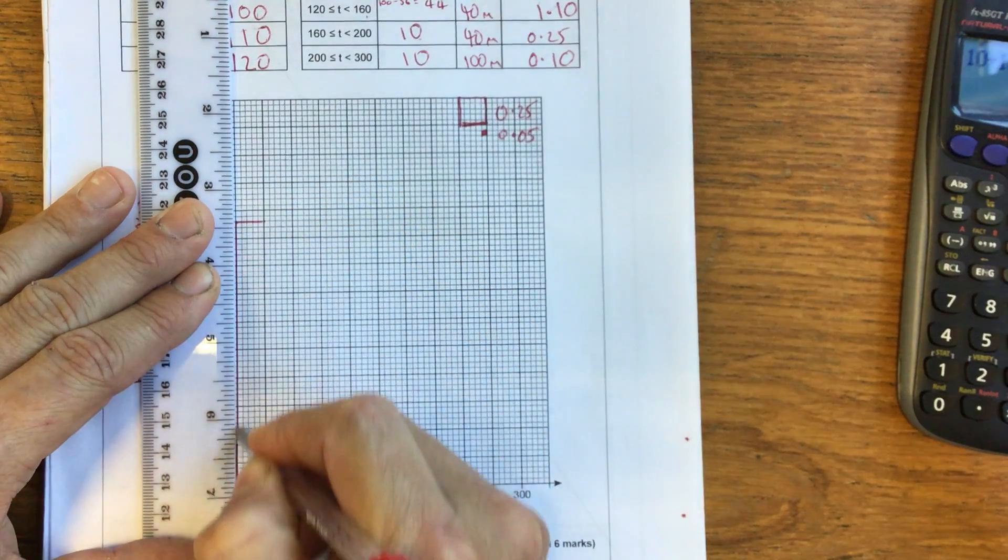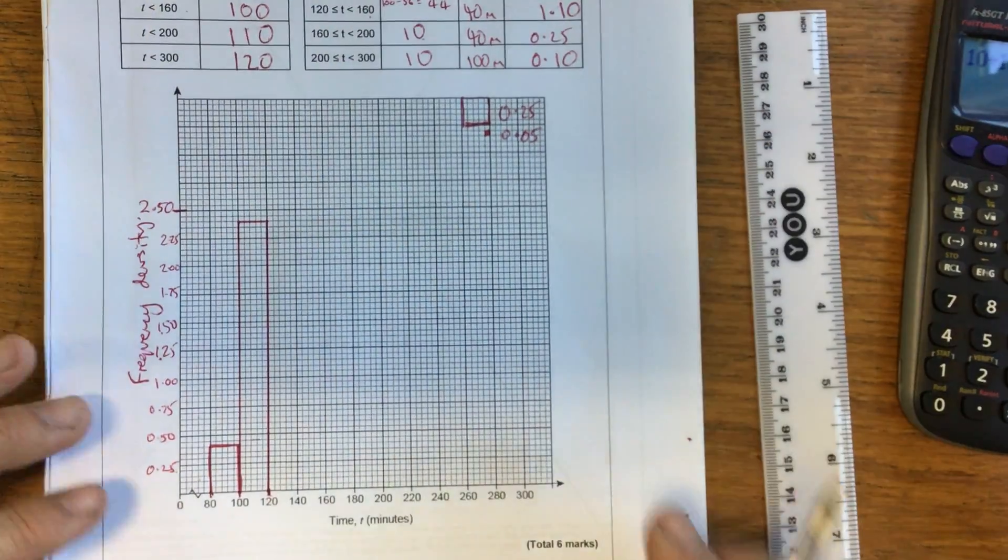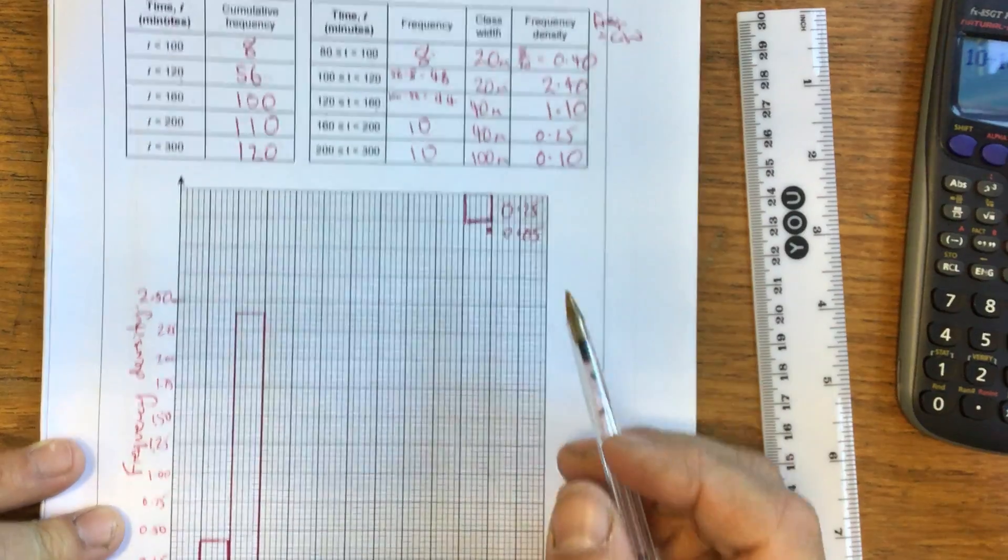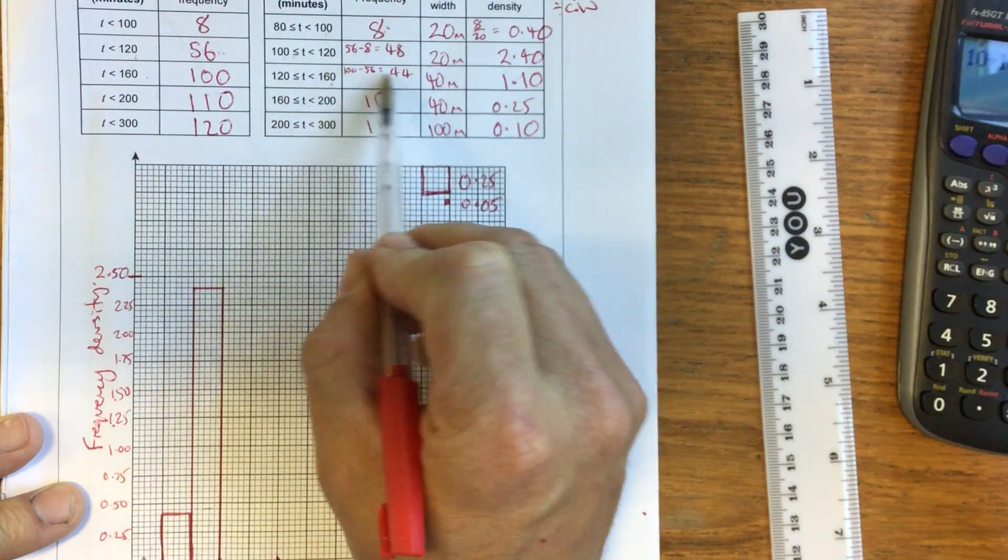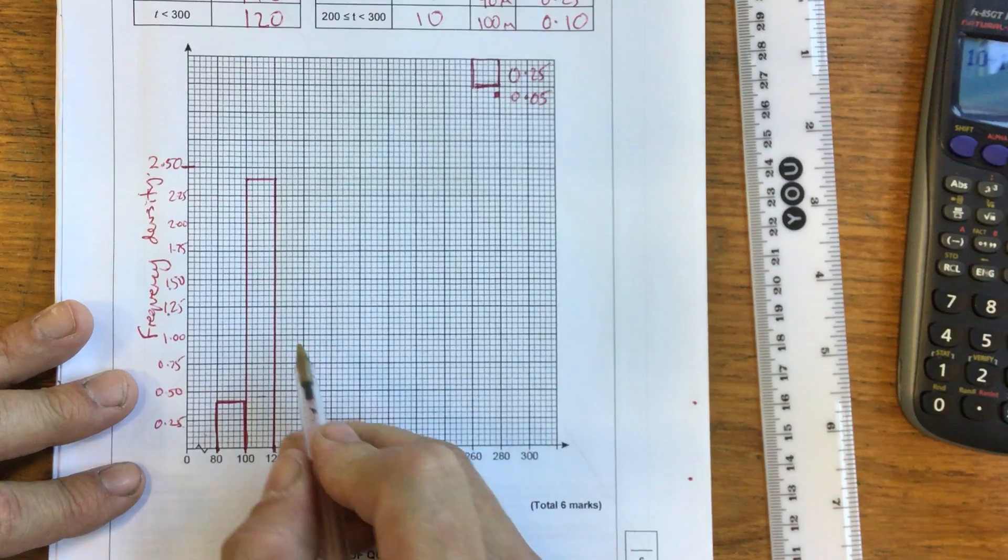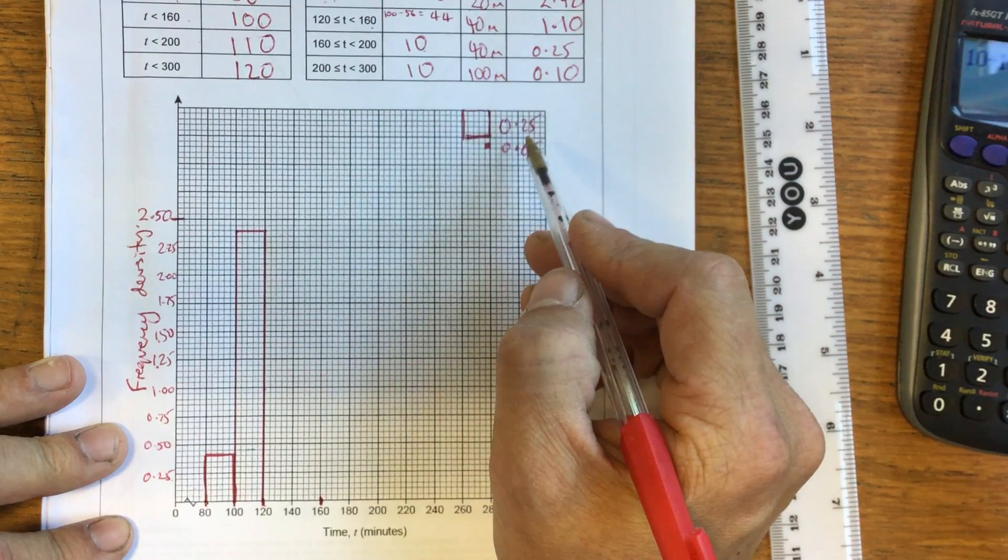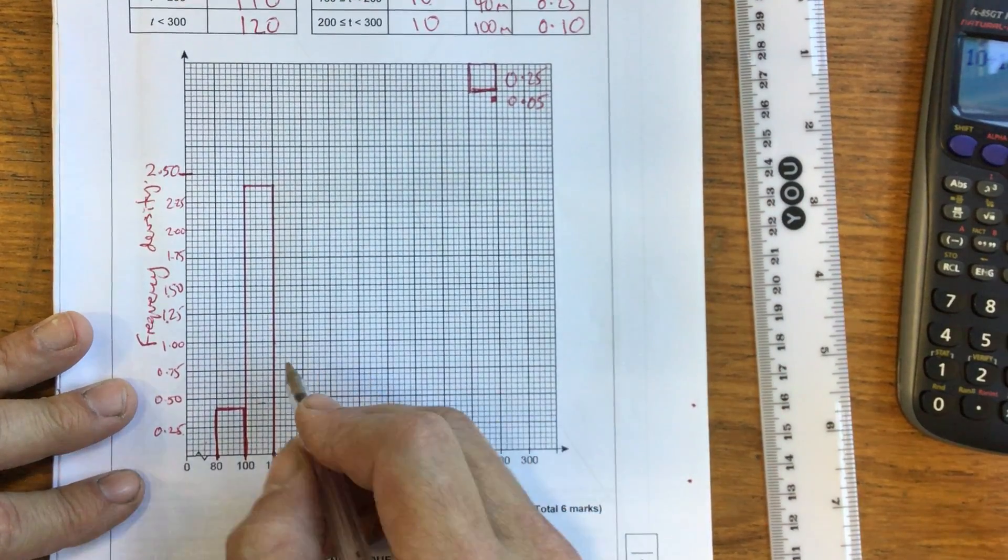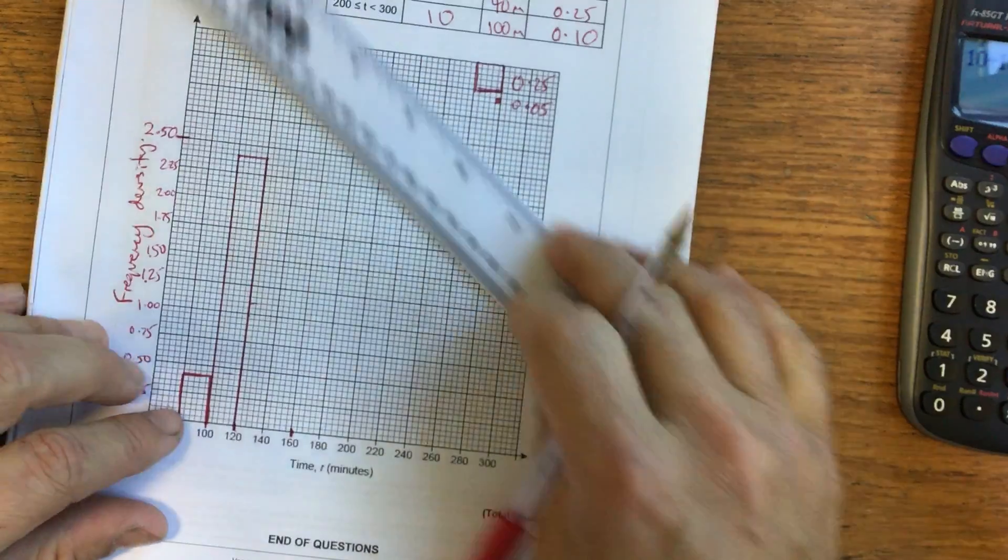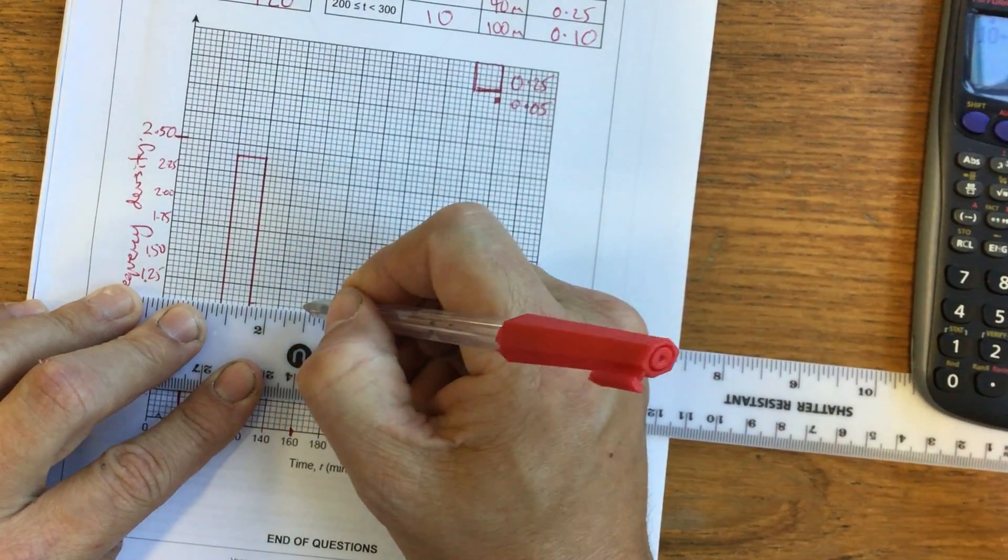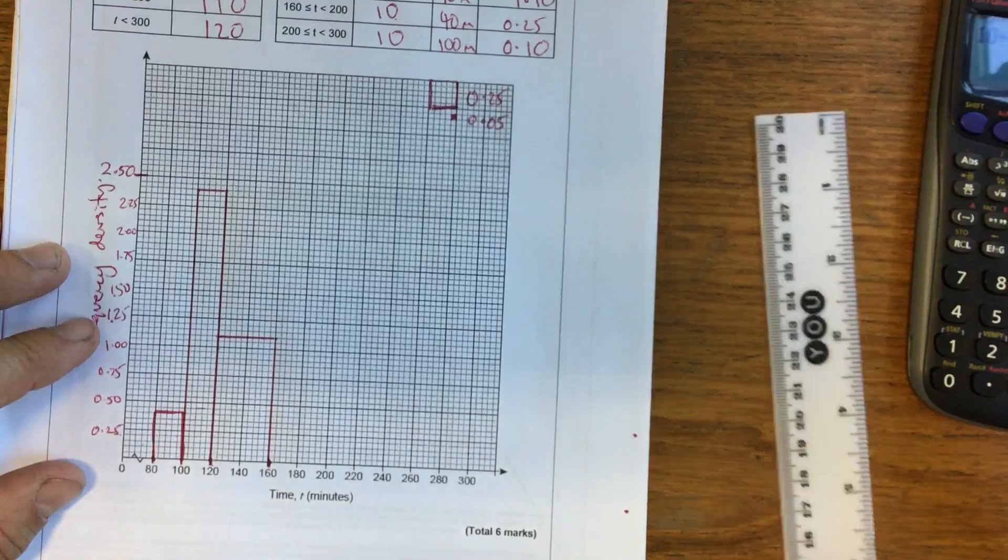Next, we've got 120 to 160, so that is a slightly wider class width, it's twice as wide. And the frequency density for this class width is 1.10. Remember, each tiny box is 0.05, so if I want 1.10, I need two of these small boxes to add on to 1.0. So that would be here. And remember, this one's going to be twice as wide as the previous two.